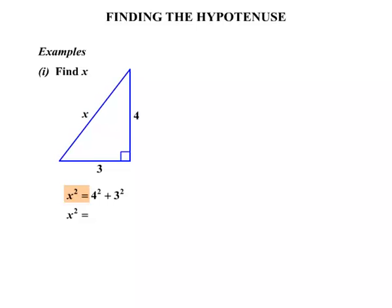Now x squared equals, write that down, 4 squared plus 3 squared. Well 4 squared is 16, 3 squared is 9. So adding the two together we get 25.